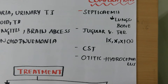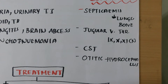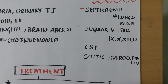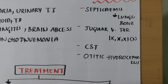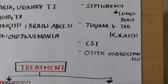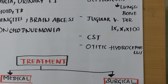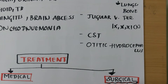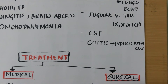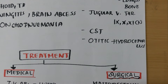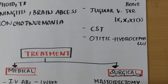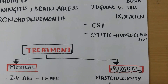Complications: septicemia may extend into lungs, bone and joints. Jugular vein thrombosis with involvement of the 9th, 10th and 11th cranial nerves. Cavernous sinus thrombosis, which is associated with chemosis, proptosis, eyeball fixation and papilledema. Otitic hydrocephalus, if thrombosis extends into the superior sagittal sinus.